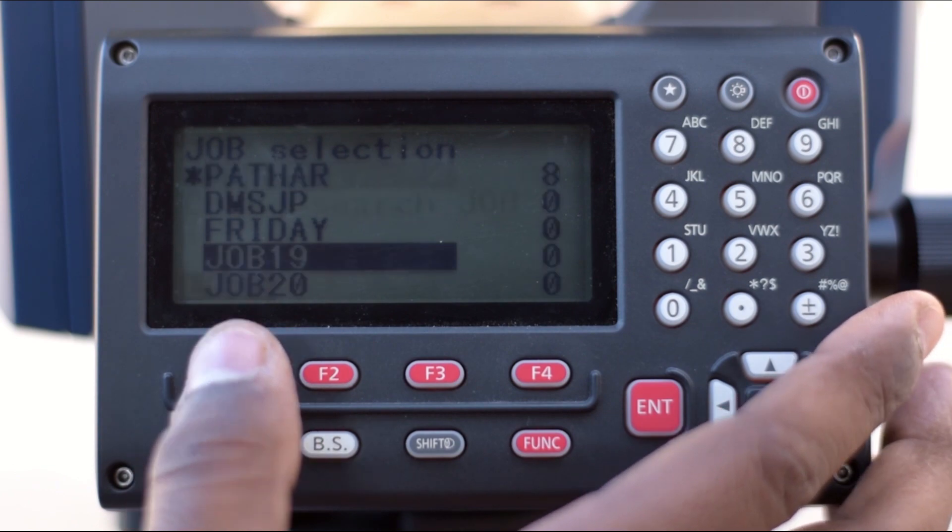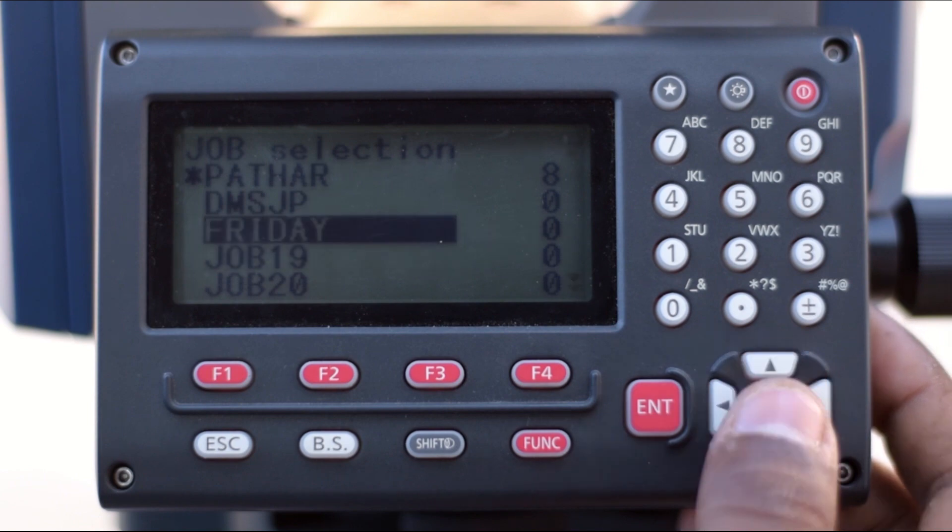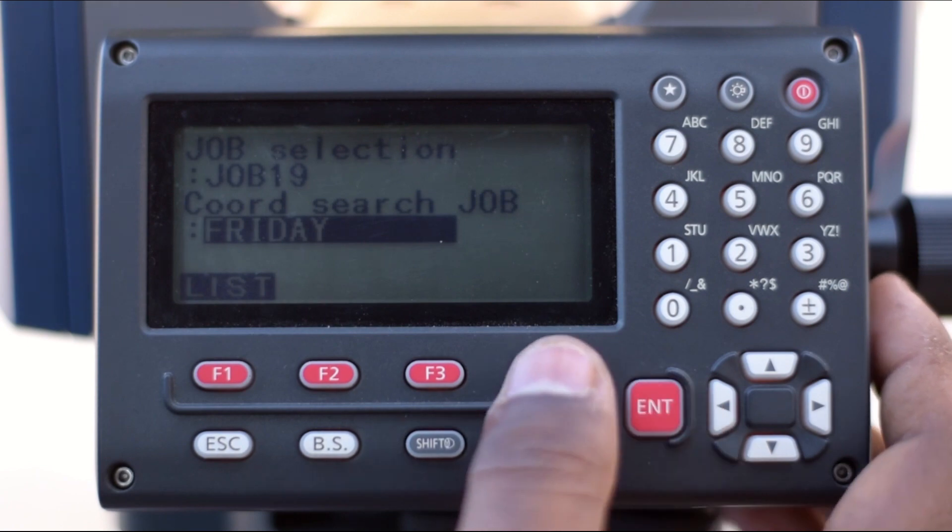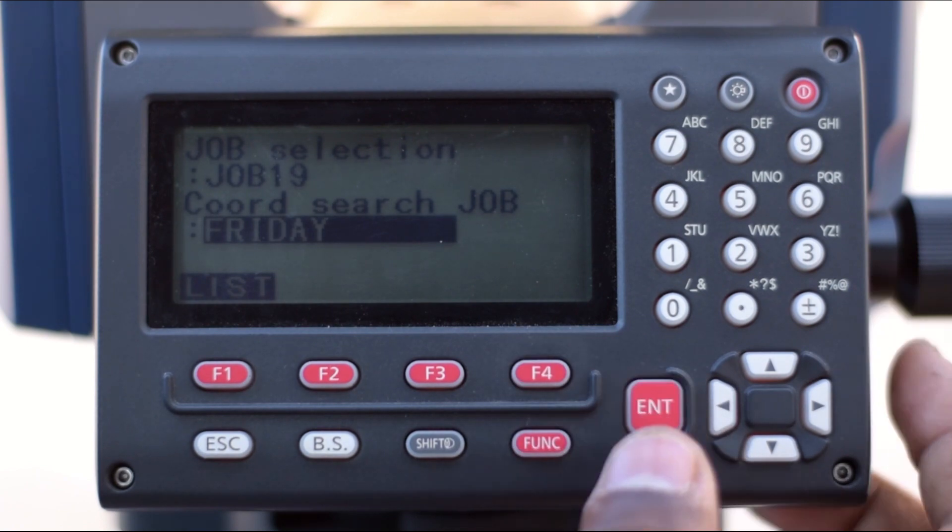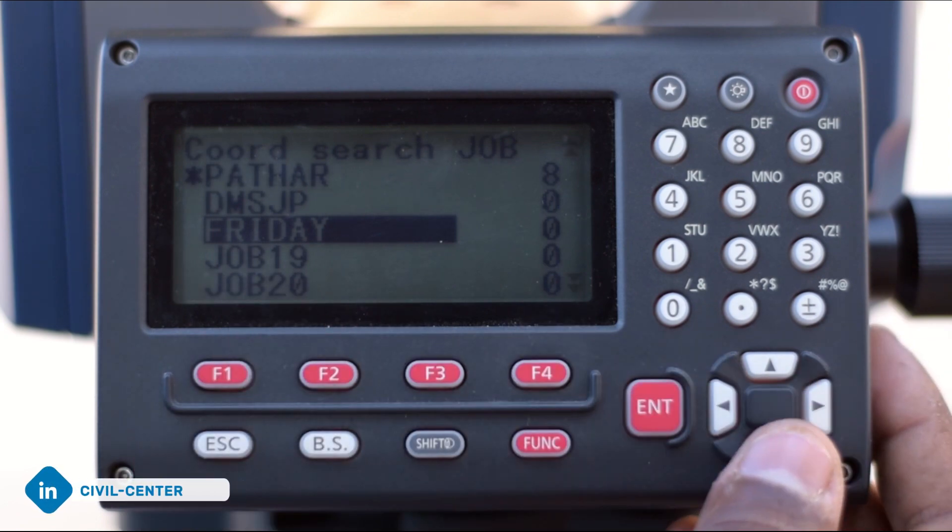One thing to be noted here is that Job Selection and Coordinate Search Job both should be the same. We can go to the List option, which is under F1. We press F1 for the list and you can see the list of jobs. Job 19, Job 20, Friday—all are empty. We'll select Job 19.